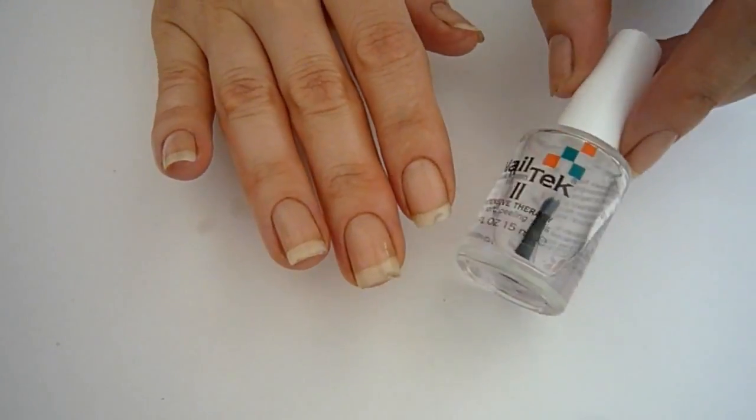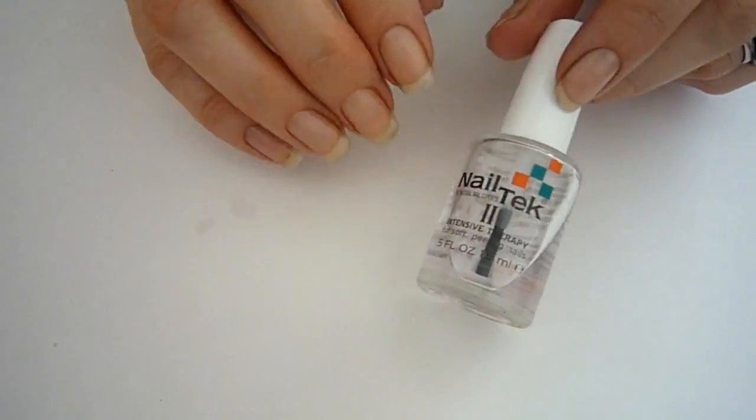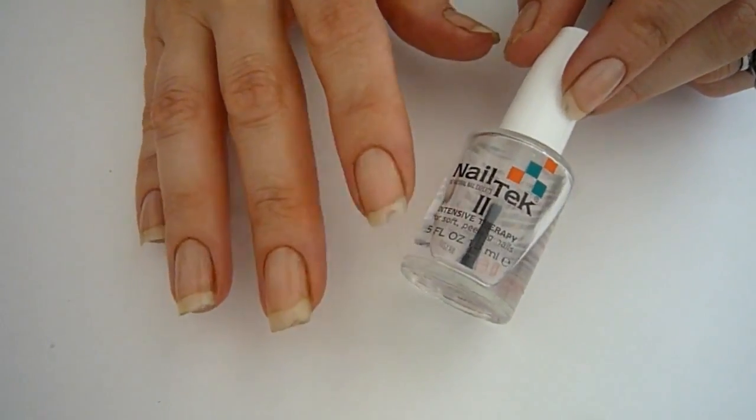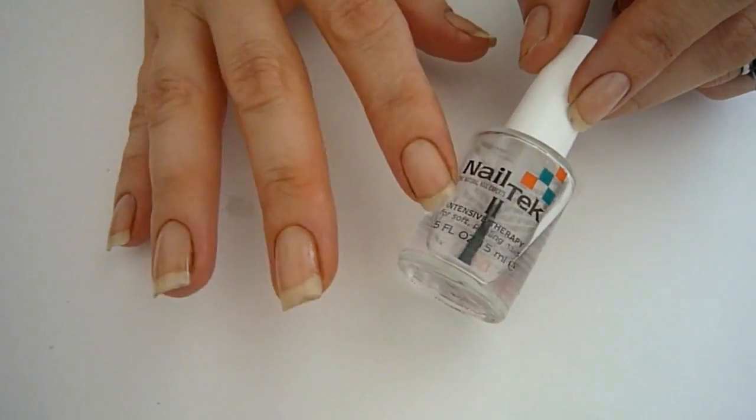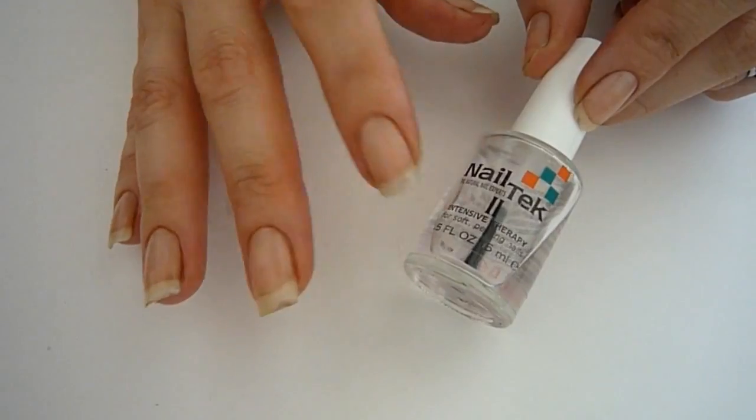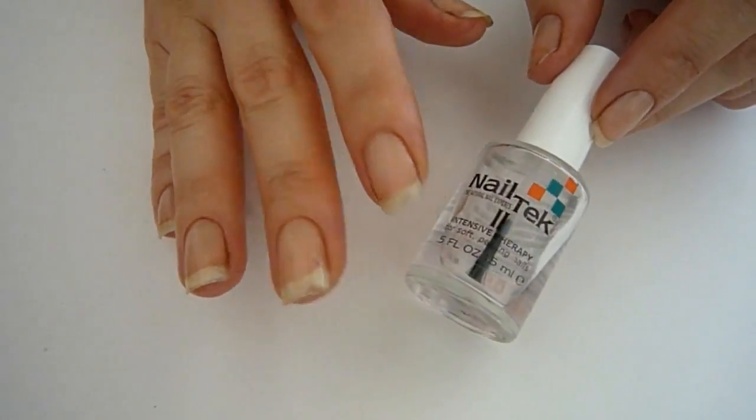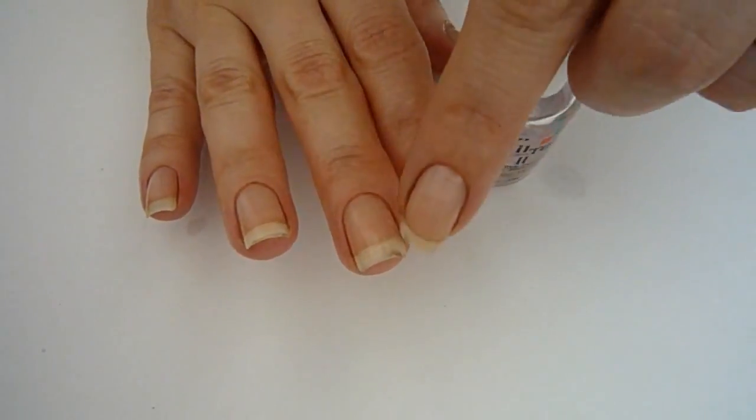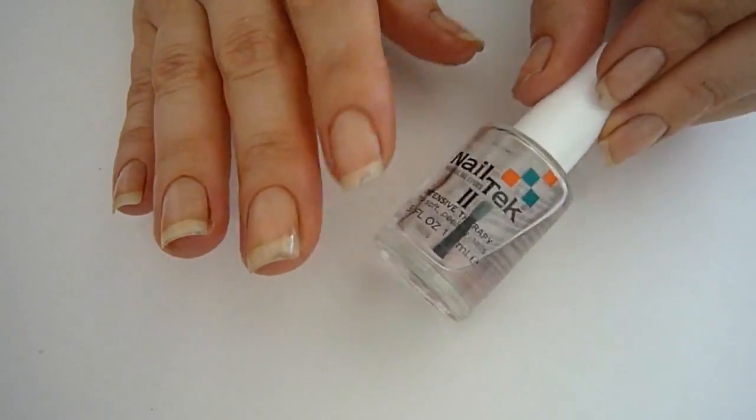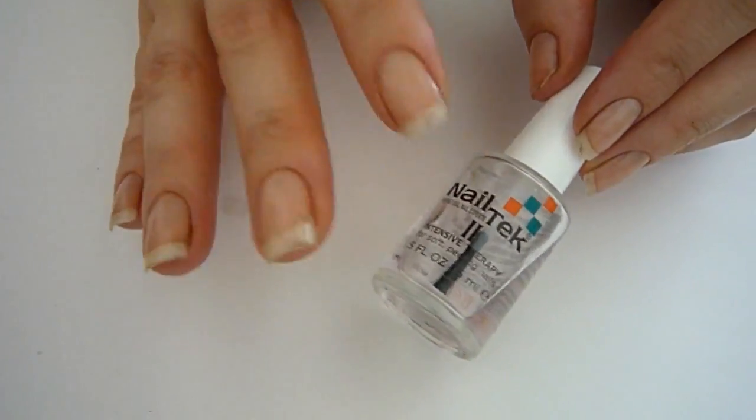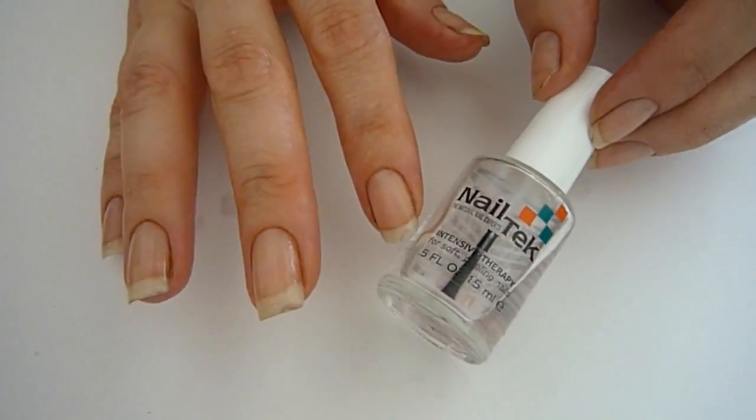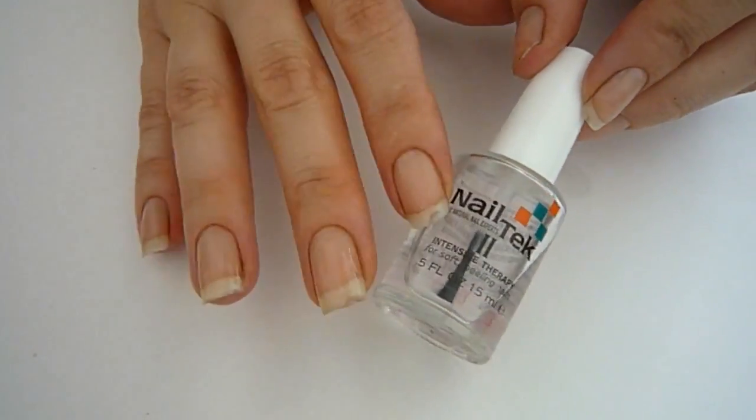After the 10 minutes you can wash your hands and towel dry them really well, then you can use your favorite nail strengthener. Right now I am using the Nail Tek intensive therapy, this is for soft peeling nails. I don't really have soft nails but I do have peeling nails around my free edges sometimes, so this is one of the ones that I really like using right now.